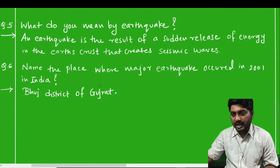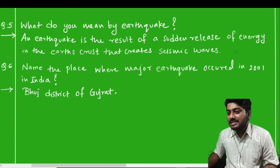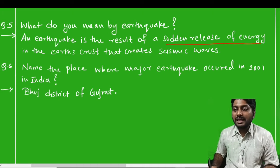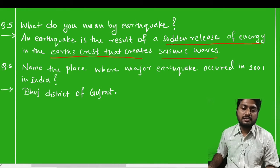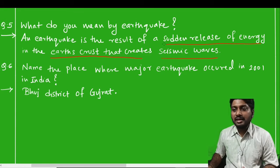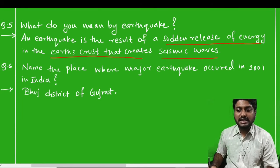Question number five: what do you mean by earthquake? An earthquake is the result of sudden release of energy in the earth's crust that creates seismic waves. This occurs due to the shifting of plates in the earth's crust.